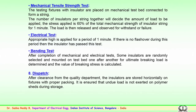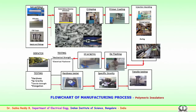After completion of mechanical and electrical tests, some insulators are randomly selected and mounted on a test bed to determine ultimate breaking load; the breaking stress is calculated. After electrical, mechanical, and bending tests — which are routine in nature — insulators cleared by the quality section are stored horizontally in crates with proper packing and fixing, ensuring undue load is not exerted on the polymer sheds, which could be damaged if not properly handled. This is how the polymer insulator manufacturing process is completed.